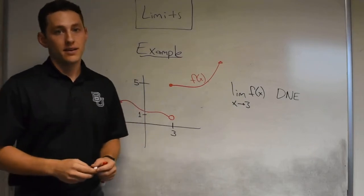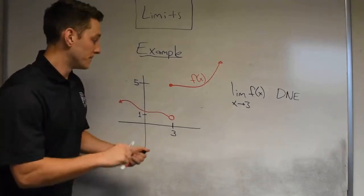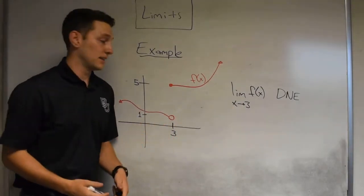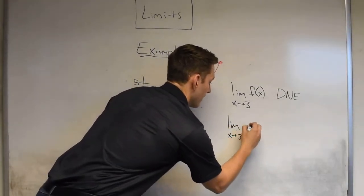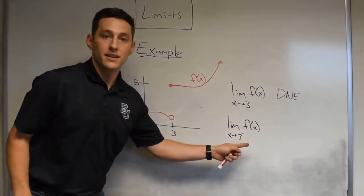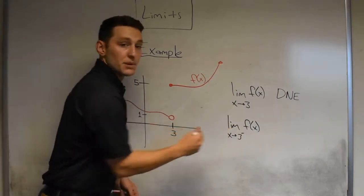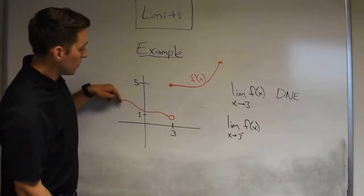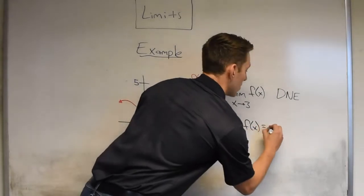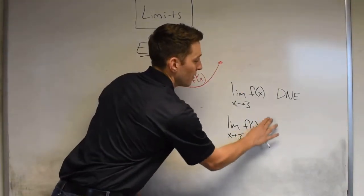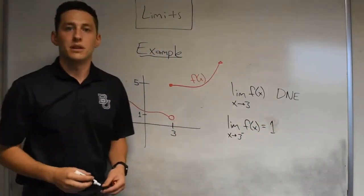There is a little bit that we can say. When we are estimating from the left hand side and the right hand side, we have what we call left-handed and right-handed limits. If I have a little superscript negative sign, since the negative side is on the left hand side of the number line, this is going to be our left hand estimate. Our left hand estimate was y equals 1 once it gets to x equals 3, so we would say the limit from the left hand side of f of x equals 1, or the left hand limit equals 1.